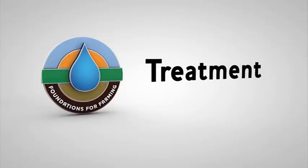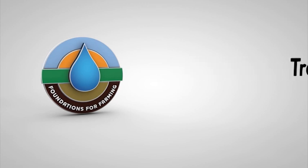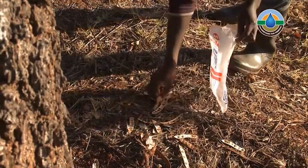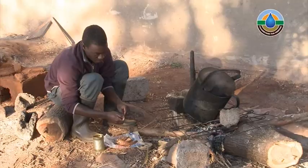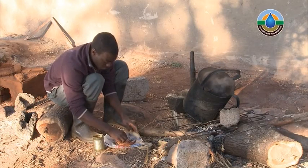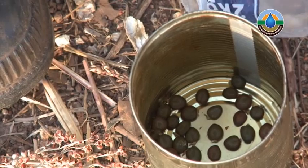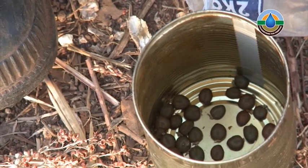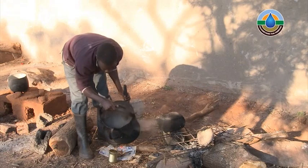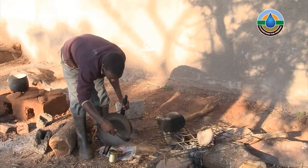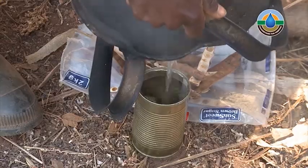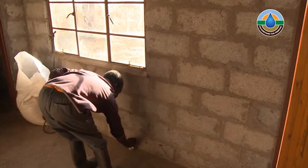Once you have the desired seed, see if it requires any treatment in order to germinate. If the seed is in a pod, remove the pod. Once you have a raw seed, if it has a hard coating, soak it in boiling water to help it burst out of this hard outer layer. Boil water and pour it over the seeds to soak overnight.